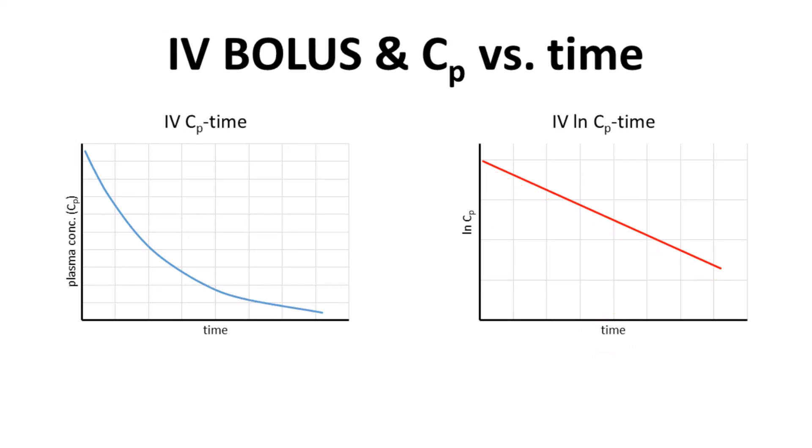Note one thing: the CP time curve does not go all the way back to time zero. This is not a mistake. Typically, you wait about 15 minutes after administering a drug by IV bolus before drawing blood from a patient and checking CP levels. Why wait? You are waiting for the drug to undergo distribution.